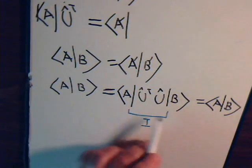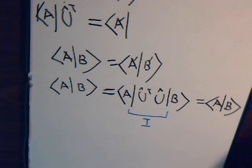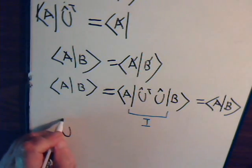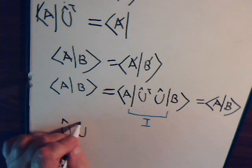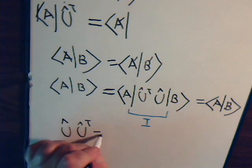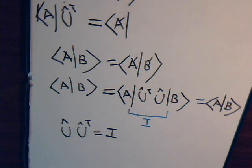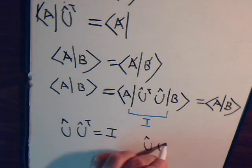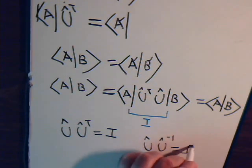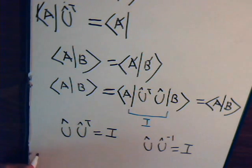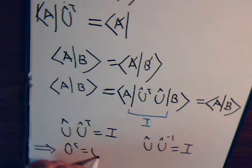When you have an operator and you multiply it by something and get the identity operator, that is the definition of an inverse. So this implies that the adjoint of our linear operator U is the inverse of it. For Hermitian operators, the operator is equal to its own adjoint — that's their special characteristic. Here, for unitary operators, the adjoint is equal to the inverse of the original operator U.